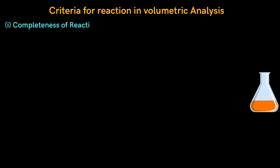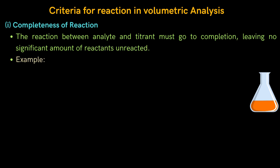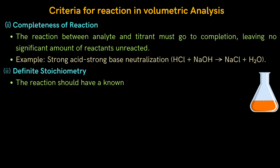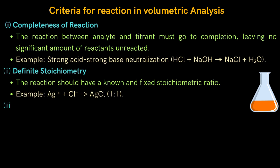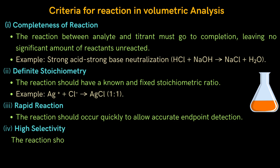Now we will see the criteria for reactions in volumetric analysis. First criteria: completeness of reaction — the reaction between analyte and titrant must go to completion, leaving no significant amount of reactants unreacted. Example: strong acid-strong base neutralization — HCl reacts with NaOH to form NaCl and H₂O. Second: definite stoichiometry — the reaction should have a known and fixed stoichiometric ratio. Example: Ag⁺ reacts with Cl⁻ to form AgCl in a 1:1 ratio. Third: rapid reaction — the reaction should occur quickly to allow accurate endpoint detection.